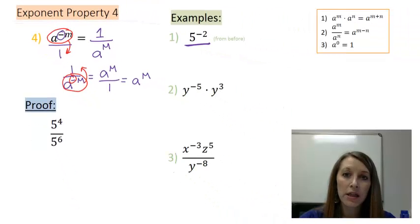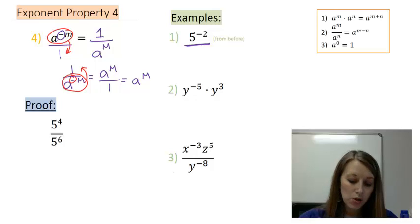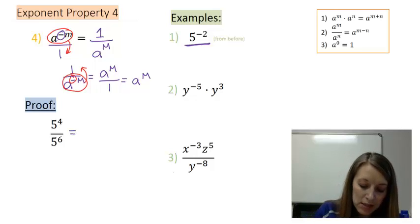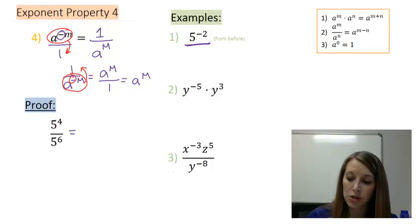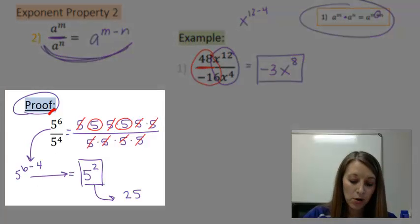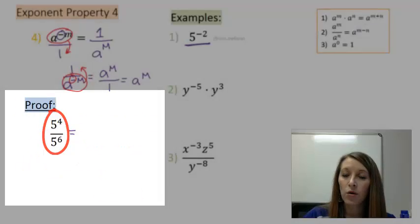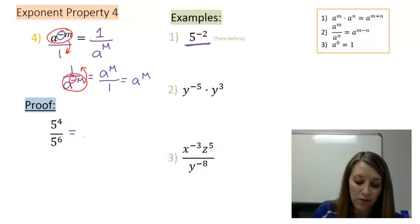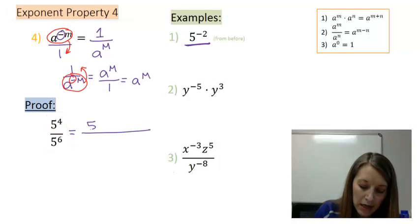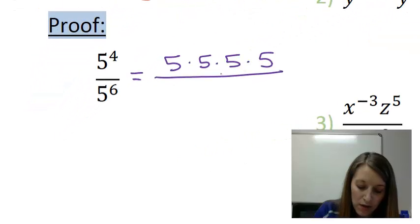Let me prove to you why this works the way it works, and then we'll do some homework examples over it. My proof is the same proof that we used in property number 2. In property 2, I used 5 to the 6th over 5 to the 4th. Here, I'm using it as 5 to the 4th over 5 to the 6th. Same thing, but I flip-flopped it. I'll write out what that actually means. 5 to the 4th is 4 of them on top, and 5 to the 6th is 6 of them on the bottom.